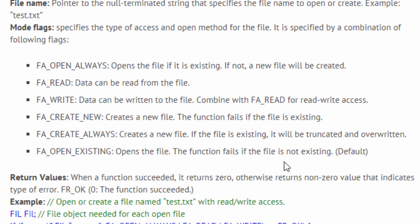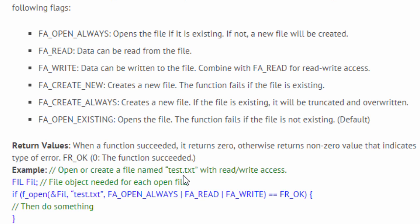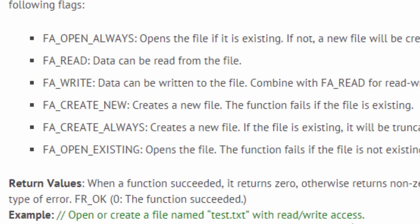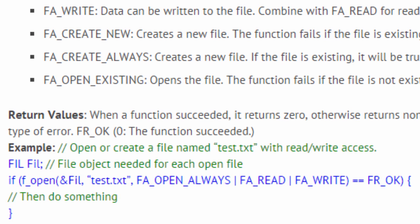Here is a simple example to open and create a file named test.txt with read and write access. First, we declare a file object — one is needed for each open file. We then call f_open, specify the file object, name it test.txt, and combine the mode flags: FA_OPEN_ALWAYS to open or create the file, FA_READ for read access, and FA_WRITE for write access. If the call returns FR_OK, we proceed.